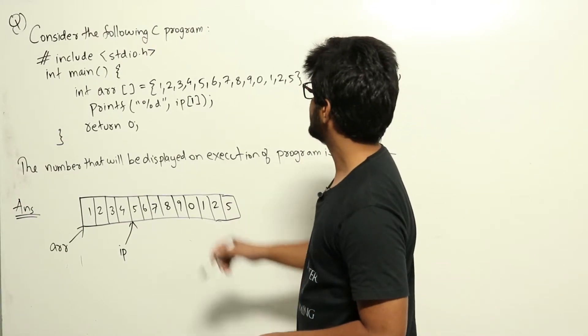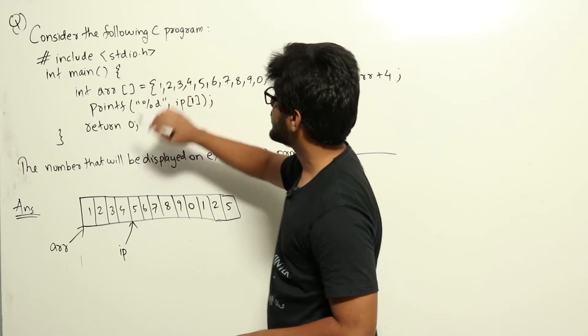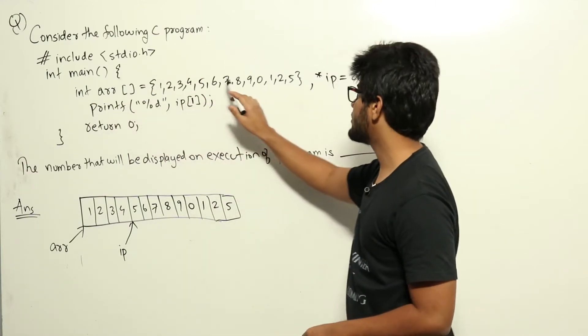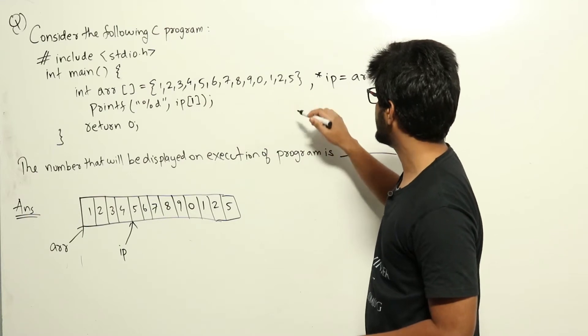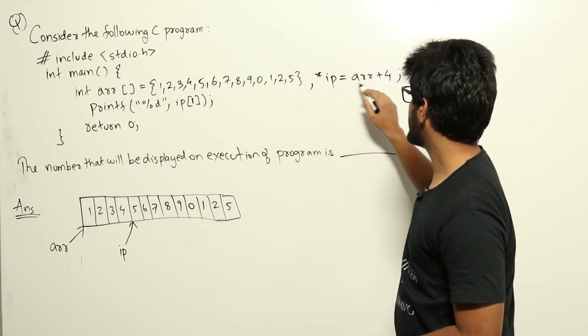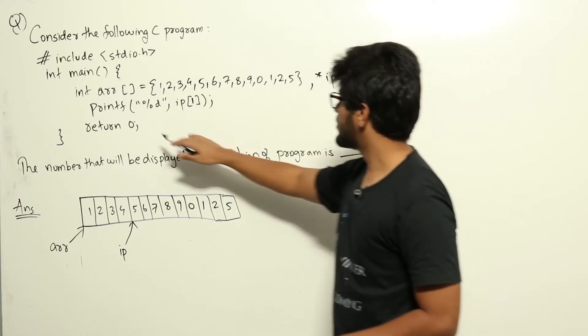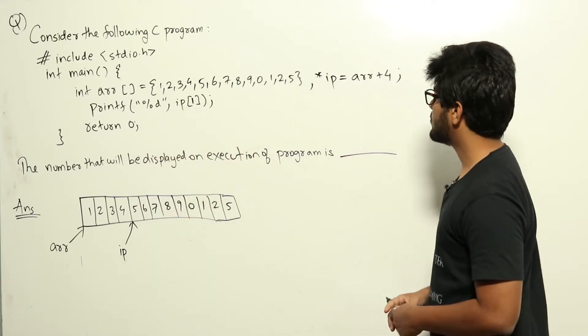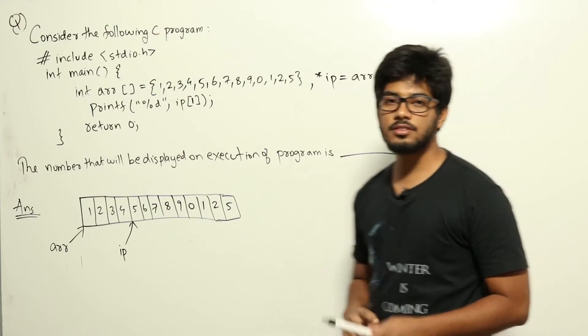Consider the following C program: #include <stdio.h>, int main() { int array = {1, 2, 3, 4, 5, 6, 7, 8, 9, 0, 1, 2, 5}, *IP = array + 4; printf("%d", IP[1]); return 0; }. The number that will be displayed on execution of program is...